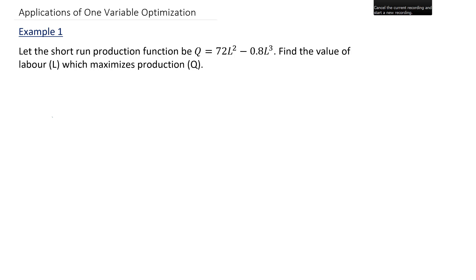So here's our first example. Let the short run production function be Q equals 72L squared minus 0.8L cubed. Find the value of labor which maximizes production.